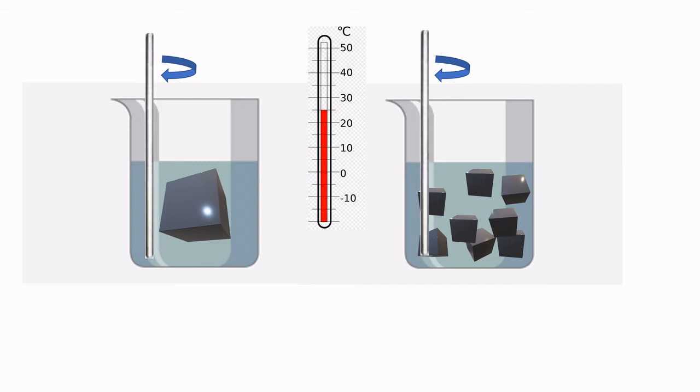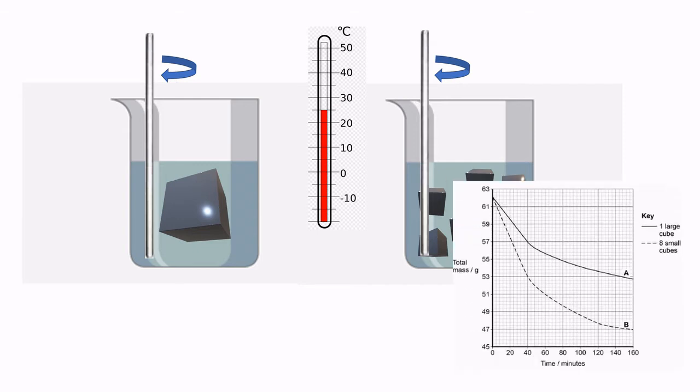We're told that the mass of the cubes was recorded at intervals, so we just need to decide what these intervals are. If we look back at the graph, we can see that at 40 minutes, there is a significant change to the shape of both curves. This means that there must be a data point plotted at 40 minutes. So, therefore, 40 minutes is the maximum time interval that we could leave our potatoes in the beakers.